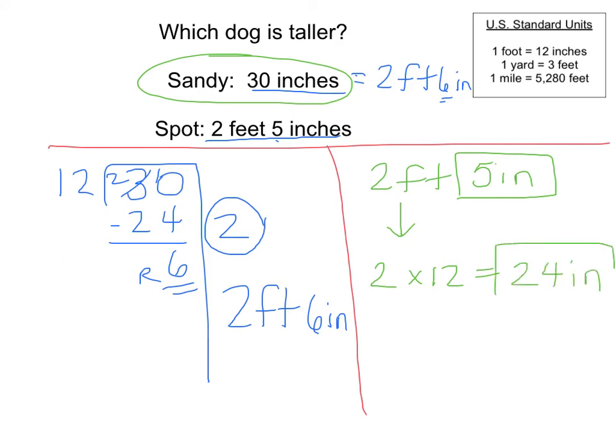So I'm going to add up 5 and 24, and I'm going to get a total of 29 inches. So that means that Spot is equal to 29 inches. And once again, we can tell that Spot is 1 inch shorter than Sandy. So Sandy is the taller dog.